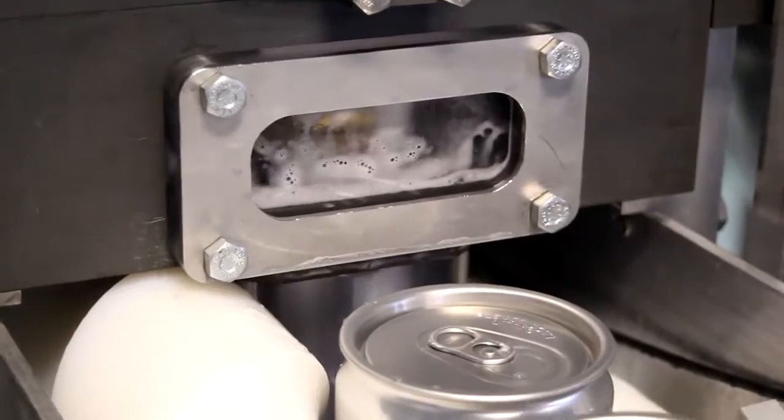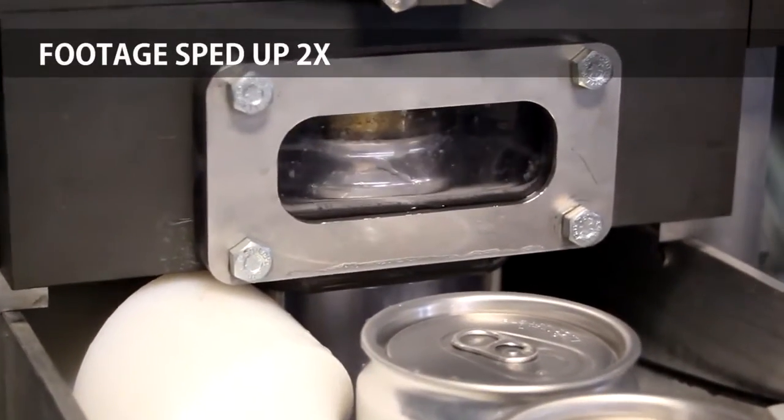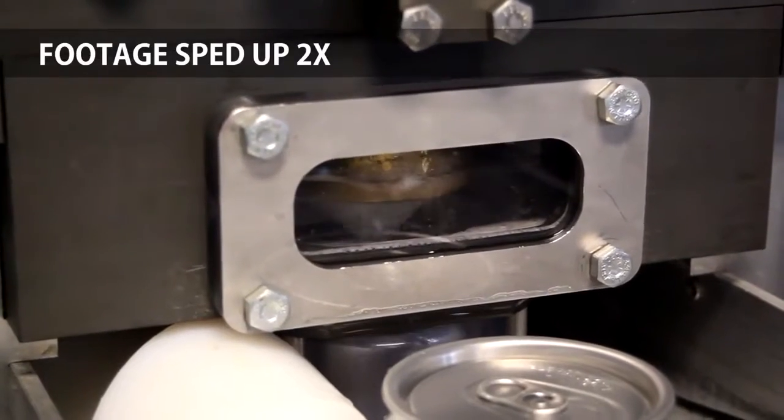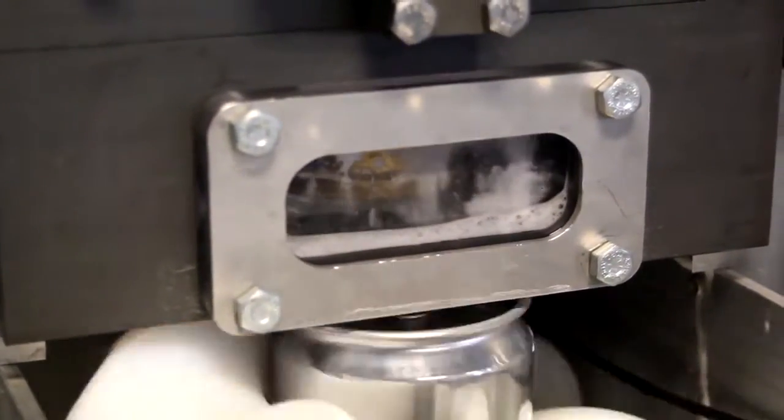The machine secures the can, grabs and removes the lid, fills the can, replaces the lid, seams the lid, and pushes the can out the back in an automated workflow.